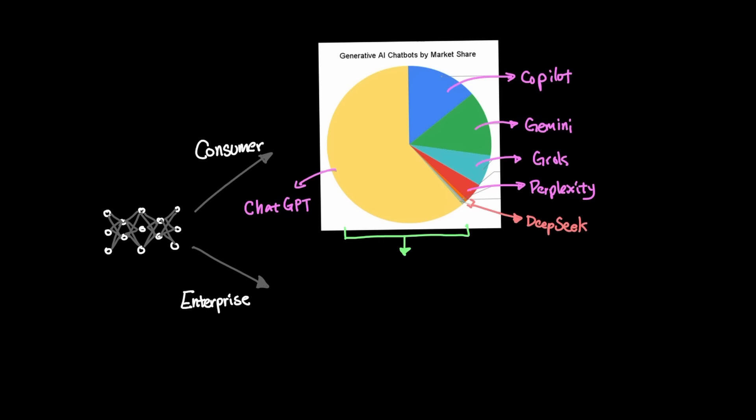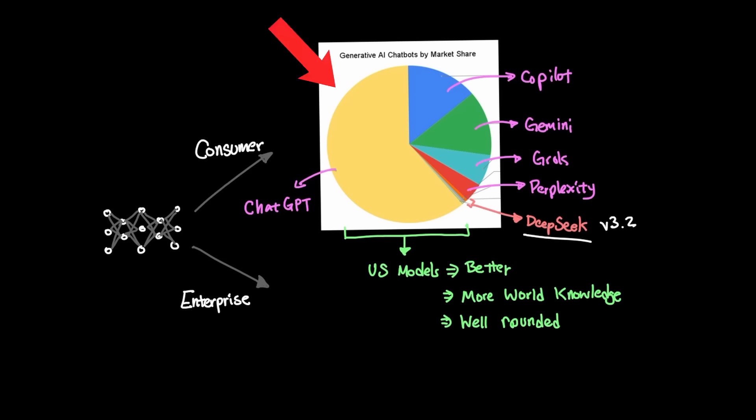And this can be explained simply, which is this: US models are just simply better for most use cases, and they just have way more world knowledge and are more well-rounded overall. So it's unlikely that DeepSeek v3.2 will impact the chatbot market by much. Most people just won't care.